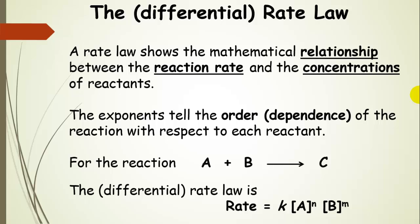The exponents give us the order, or the dependence, of the reaction with respect to each reactant. As an example reaction, we have A plus B going to C, where C is the product. Our generalized differential rate law is: rate equals k times the concentration of A to the power N, times the concentration of B to the power M, all multiplied together. N and M are the order of each reactant — the dependence of the reaction rate on the concentration of A and B respectively.